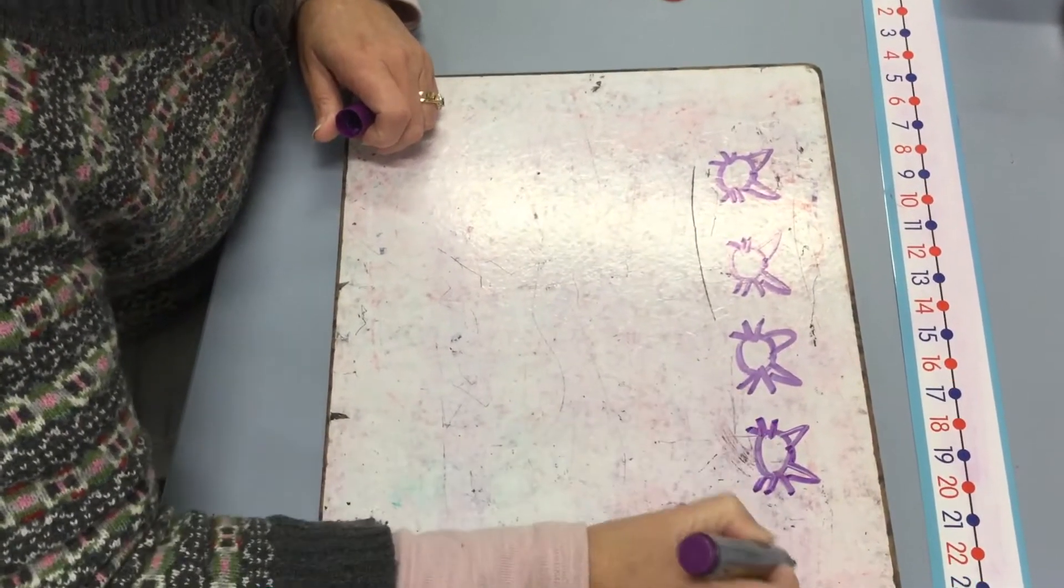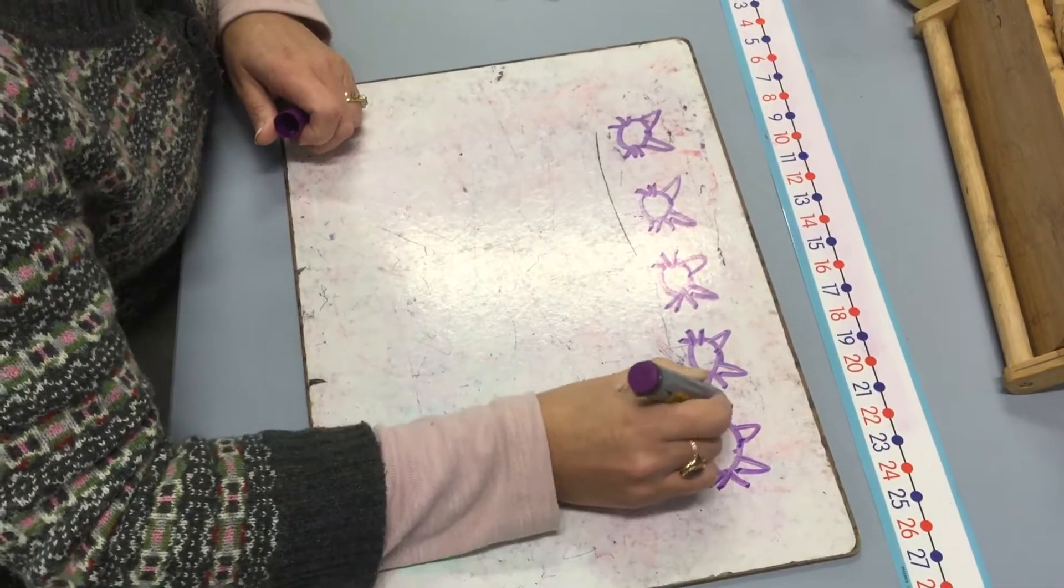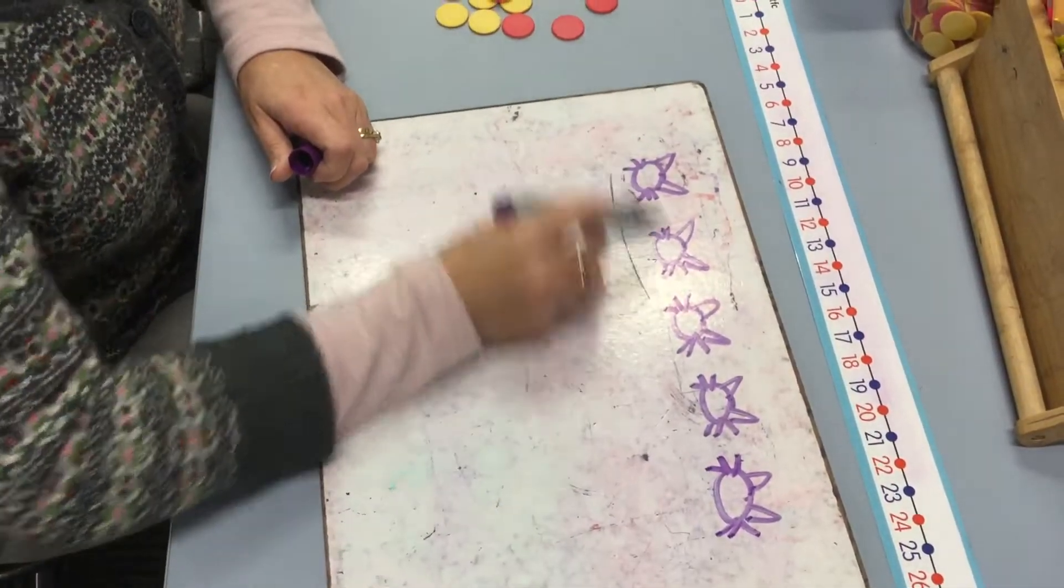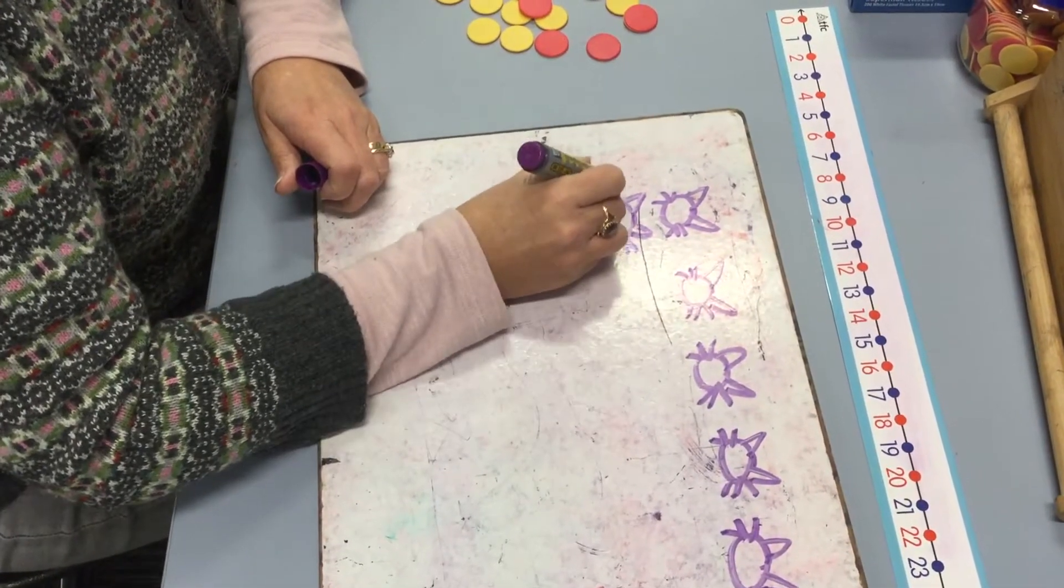I like to draw them in five because then I can subitize. That's a good idea. Yeah I like it, so you've got five and then six, and that always helps us, the subitizing.